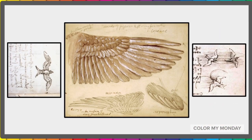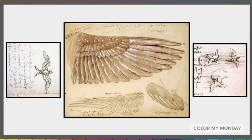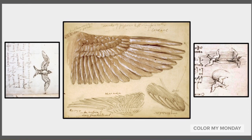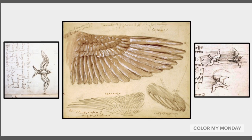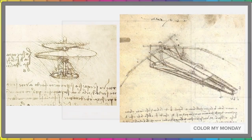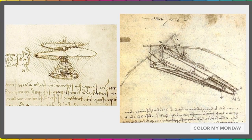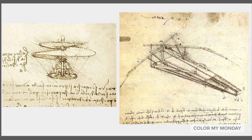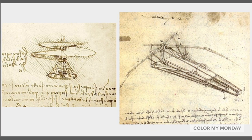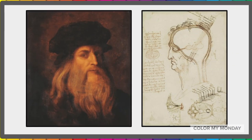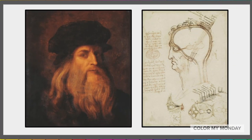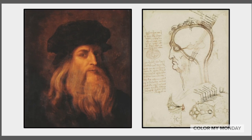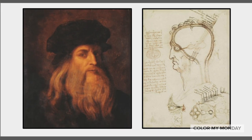He was a vegetarian who loved animals. It's said that he would go to the market and buy birds in cages just so he could set them free. He was fascinated with birds in flight and worked to invent a flying machine so people could fly too. Leonardo da Vinci said, "Learning is the only thing the mind never exhausts, never fears, and never regrets."